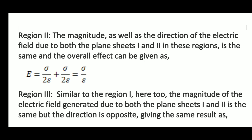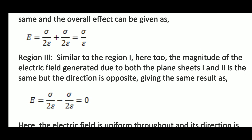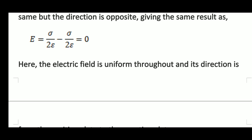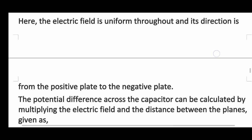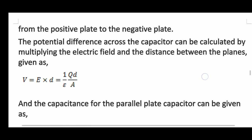Region three, to the right of the second plate, is again similar to region one: the electric field intensity is sigma upon 2 epsilon nought minus sigma upon 2 epsilon nought, which equals zero. The electric field between the plates is uniform throughout and its direction is from the positive plate to the negative plate.